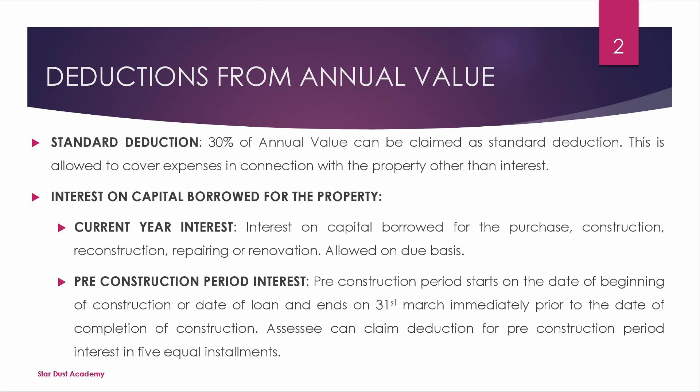If you want to know the end date: 31st March immediately prior to the date of completion of construction. For example, if construction is complete in June, then 31st March of the preceding financial year is the end date of the pre-construction period.